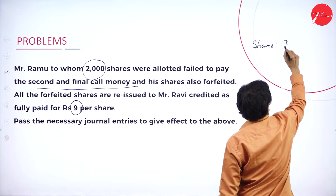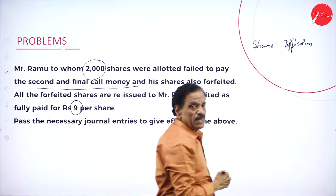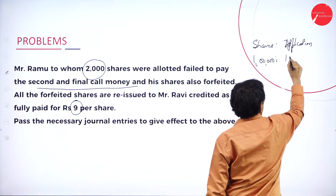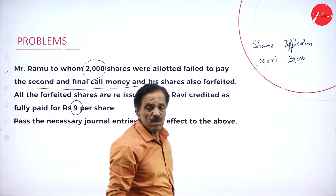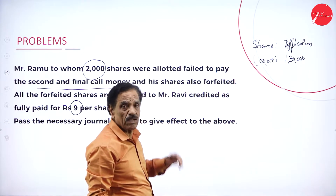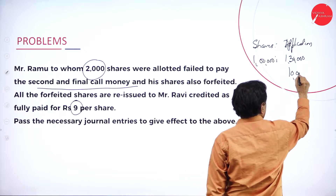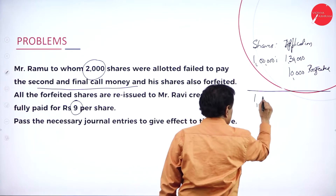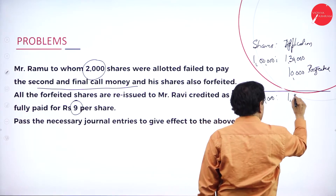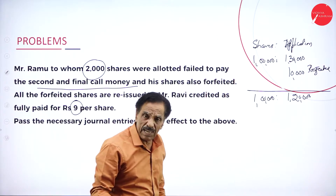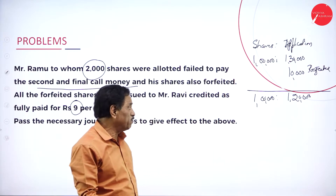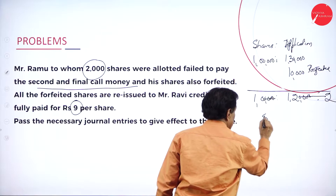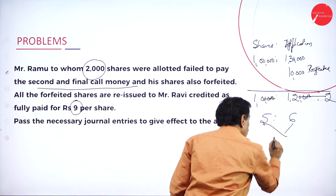Shares to applications: we require 1 lakh shares and received 1,30,000 applications. How many applications rejected? 10,000 is rejected. For 1 lakh shares, we are accepting 1,20,000 applications. Cancel the zeros, divide by 2 — it is called pro-rata adjustment, ratio of 5 is to 6.